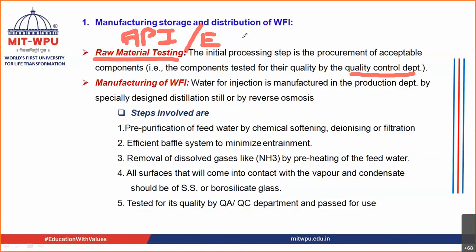In case of parenteral products, you are going to manufacture water for injection. Water for injection is also an excipient; it is an important vehicle. This should also be passed by your quality control department. You should carry out the testing of this water for injection. You can prepare an AgNO3 solution, take water, put the AgNO3 solution inside it, and see if there is some turbidity — that will give you an idea whether chlorine is present or not.